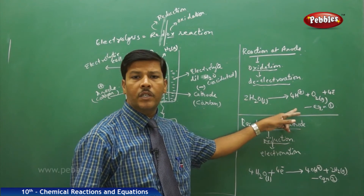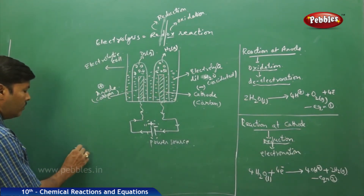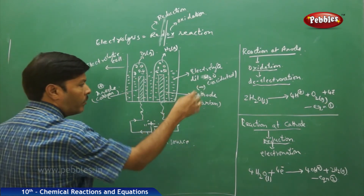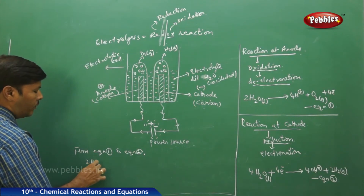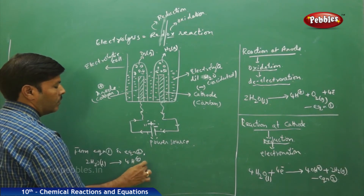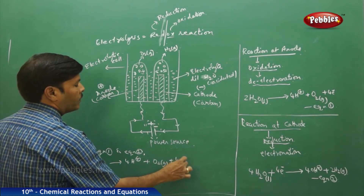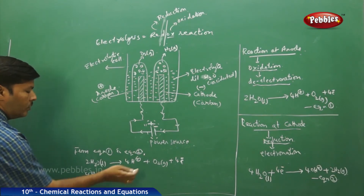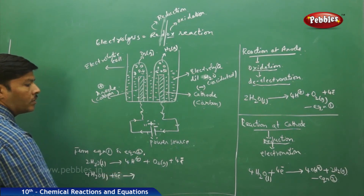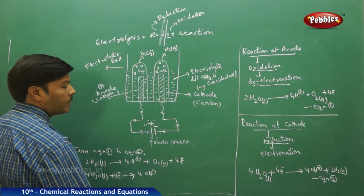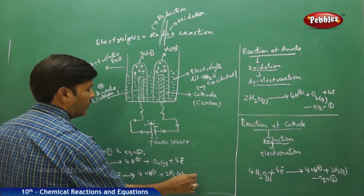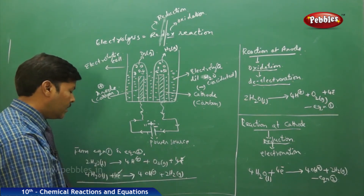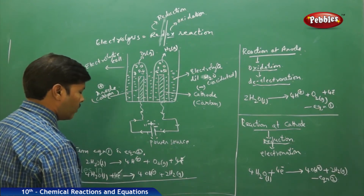Adding equation 1 and equation 2: from equation 1, 2H₂O(l) → 4H⁺ + O₂(g) + 4e⁻; from equation 2, 4H₂O(l) + 4e⁻ → 4OH⁻ + 2H₂(g). When we add both equations, the 4 electrons on the product side of equation 1 and the 4 electrons on the reactant side of equation 2 cancel out. Nothing else can be cancelled at this stage.